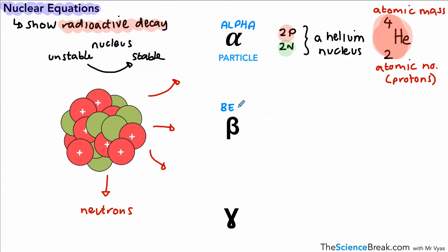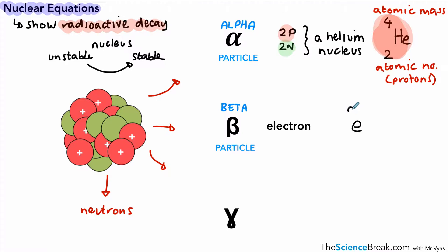Our next one is the beta particle. You may remember that it comes from a neutron changing into a proton and an electron. The way we show a beta particle — it's an electron — we use a symbol with an atomic mass of pretty much zero and a minus one for the number at the bottom, and we'll see why that is in a moment.